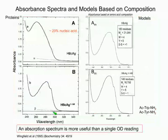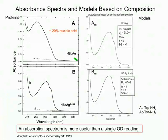An absorption spectrum is more useful than a single OD reading. Here are two proteins with basically the same aromatic content, but one contains nucleic acid. Taking a single reading at 280 would give you an error in determining this protein. These two proteins have masses of about 3 to 4 million—nuclear capsid proteins. Light scattering can be corrected by a simple linear plot. Bioinformatics sites can calculate spectra from amino acid composition, and discrepancies may indicate nucleic acid content.